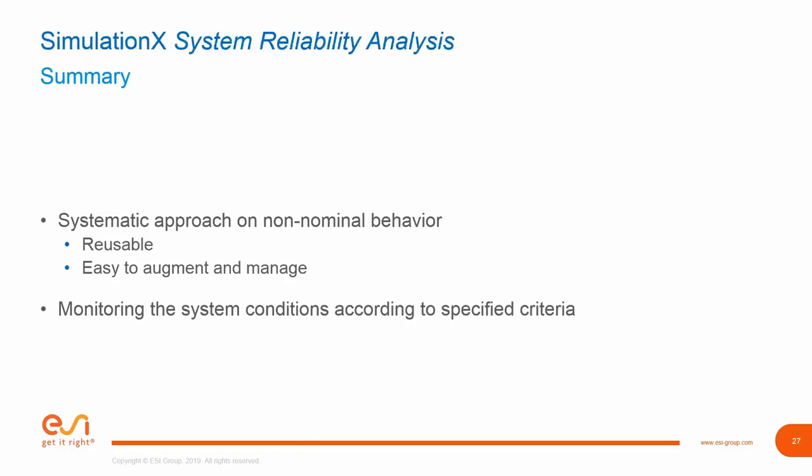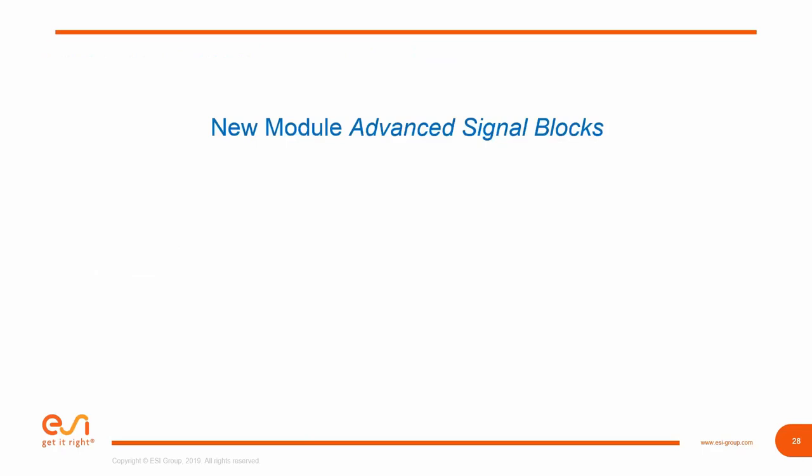These faults are reusable — you can reuse them across different models — and the interface makes it easy to augment and manage your faults. Also included in the System Reliability Analysis module are features to monitor system conditions according to specific criteria. We also have a new module called Advanced Signal Blocks, which includes libraries for signal feature extraction and for evaluating influences on requirements. This is included in the System Reliability Analysis but is also available as a separate module for further applications.